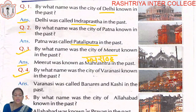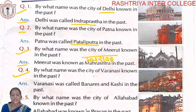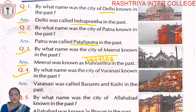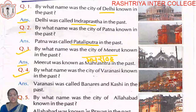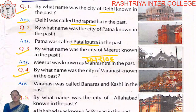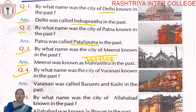Question number four: By what name was the city of Varanasi known in the past? Varanasi was called Banaras and Kashi in the past.